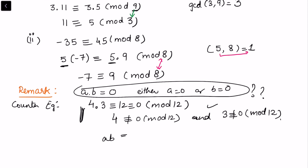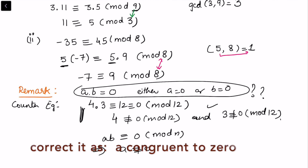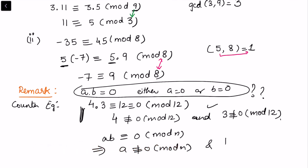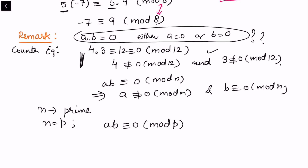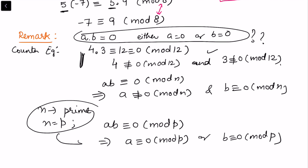Whenever ab is congruent to 0 modulo n, this does not imply that a is congruent to 0 modulo n and b is congruent to 0 modulo n. However, there is an exception when n is prime. If we denote n as p, then whenever ab is congruent to 0 modulo p, it follows that either a is congruent to 0 modulo p or b is congruent to 0 modulo p. This result holds for prime moduli but may not hold for composite numbers.